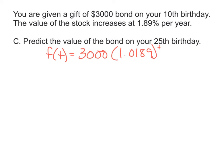So, we're still working with the same problem. You're given a gift of $3,000 bond on your 10th birthday. The value of the stock increases at 1.89% per year. Predict the value of the bond on your 25th birthday. So, I went ahead, brought that formula back. Because now, we're talking about the difference from year 10, the 10th birthday, through the 25th birthday. Which means a difference of 15. So, I need to plug in my T value is 15. Because 15 years will have gone on to determine what that value is.